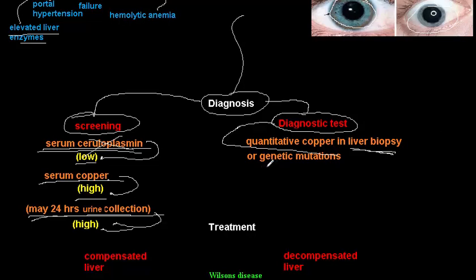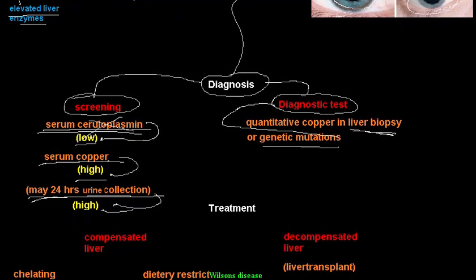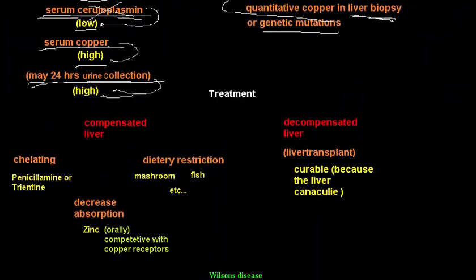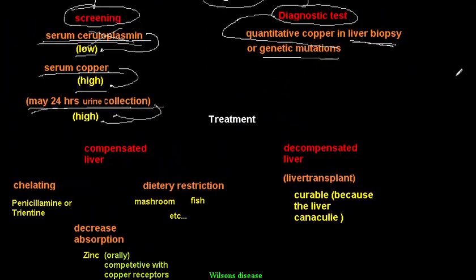The definitive diagnostic test is a liver biopsy showing quantitative copper accumulation. With appropriate techniques, genetic mutations in the ATP7B gene on chromosome 13 can also be identified as a diagnostic test.